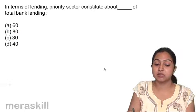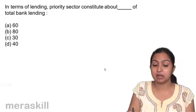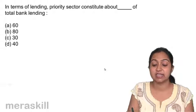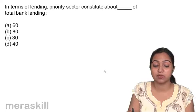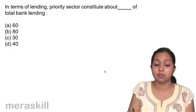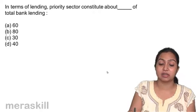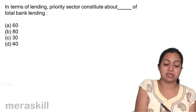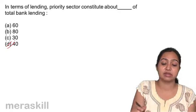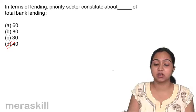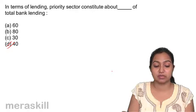In terms of lending, the priority sector constitutes about what percent of total bank lending? The answer is 38% — rounded off, you can say nearly 40% of the lending goes to the priority sector.